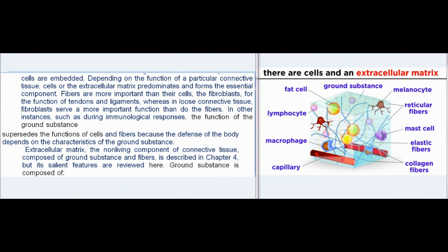Depending on the function of a particular connective tissue, cells or the extracellular matrix predominates. Fibers are more important than their cells — the fibroblasts — for the function of tendons and ligaments, whereas in loose connective tissue fibroblasts serve a more important function than do the fibers. In other instances, such as during immunological responses, the function of the ground substance supersedes the functions of cells and fibers because the defense of the body depends on the characteristics of the ground substance.